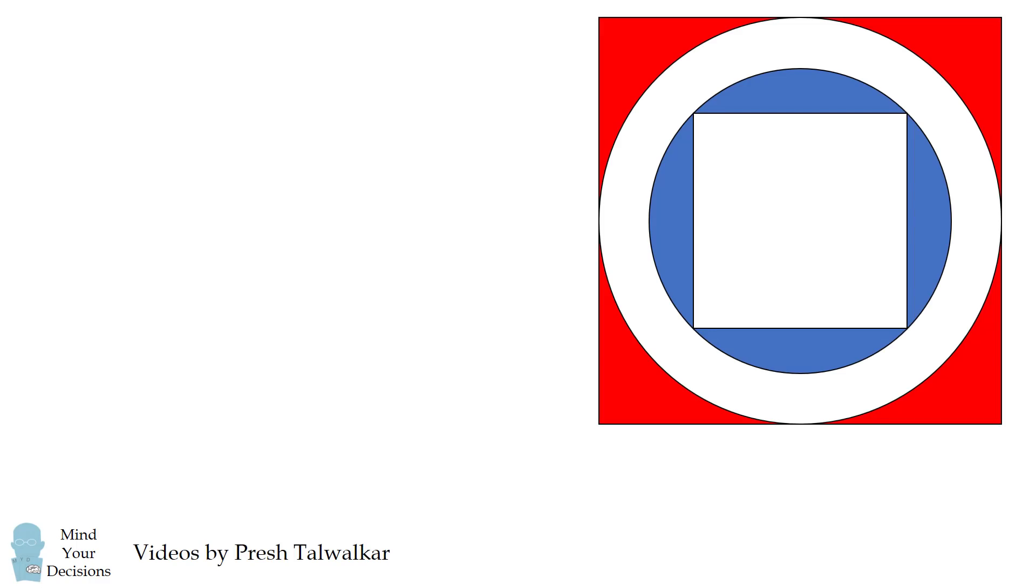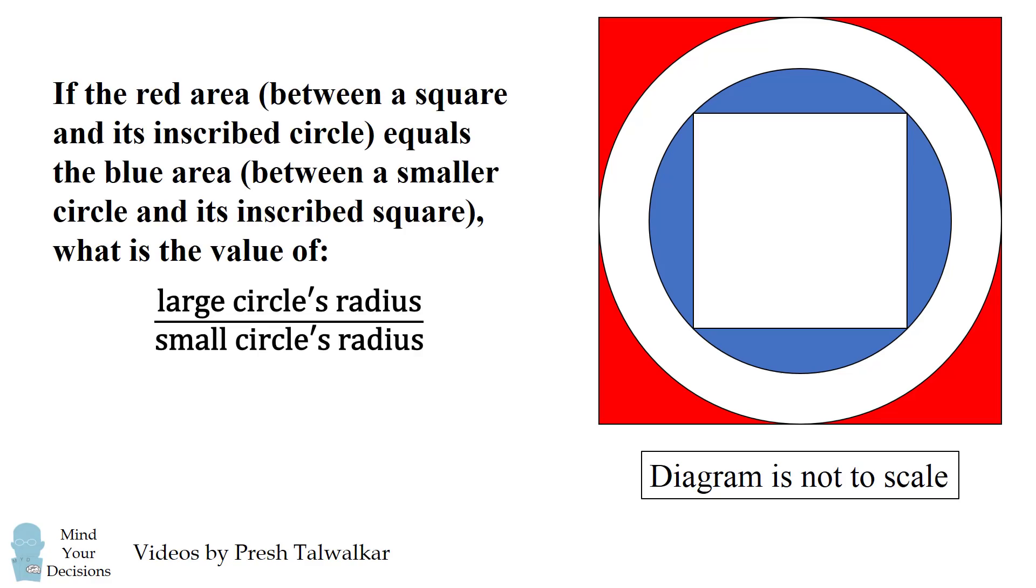Hey, this is Presh Talwalkar. In the following diagram, if the red area between a square and its inscribed circle equals the blue area between a smaller circle and its inscribed square, what is the value of the large circle's radius divided by the small circle's radius?